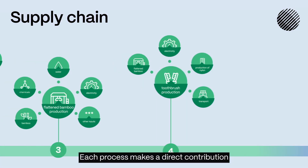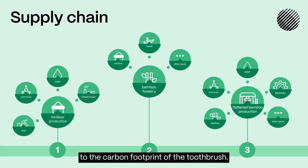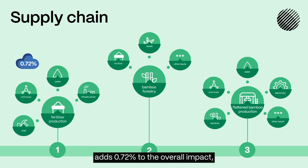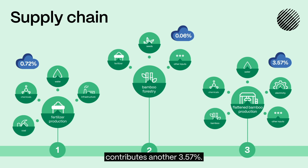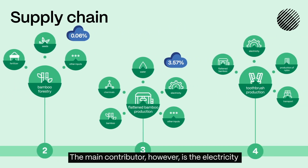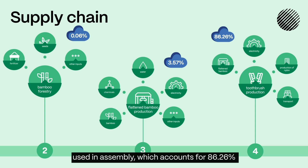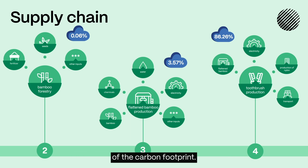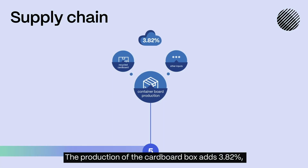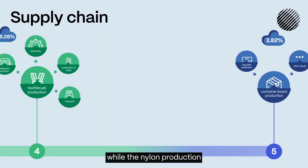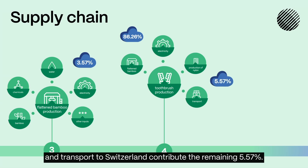Each process makes a direct contribution to the carbon footprint of the toothbrush. For example, fertilizer production adds 0.72% to the overall impact, growing the bamboo adds 0.06%, and processing it into flattened bamboo contributes another 3.57%. The main contributor, however, is the electricity used in assembly, which accounts for 86.26% of the carbon footprint. The production of the cardboard box adds 3.82%, while nylon production and transport to Switzerland contribute the remaining 5.57%.